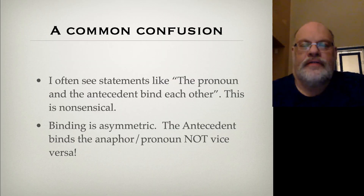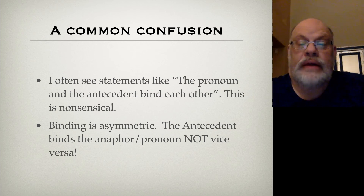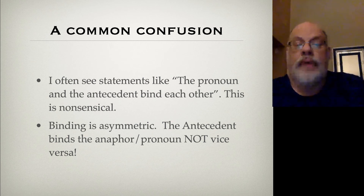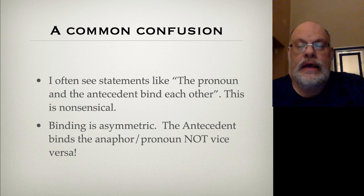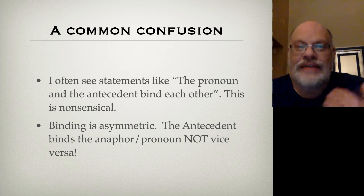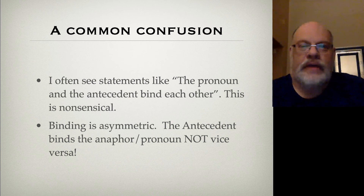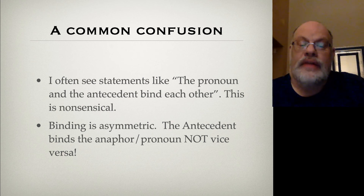One mistake I often see students make is writing that the pronoun and the antecedent bind each other. This is not possible, because binding is an asymmetric relationship. The antecedent binds the anaphor or pronoun — it's never the case that the pronoun binds the antecedent. This is because the C-command relationship is asymmetric, so it's never the case that the two nouns bind each other.